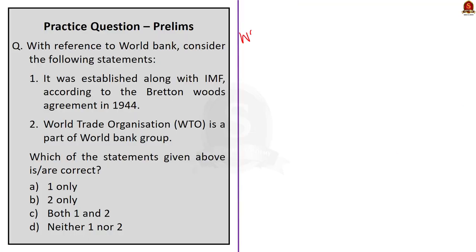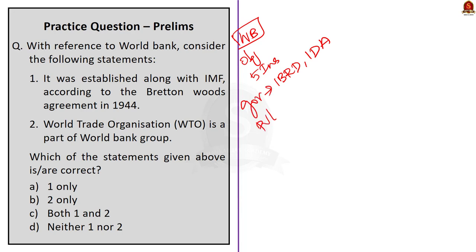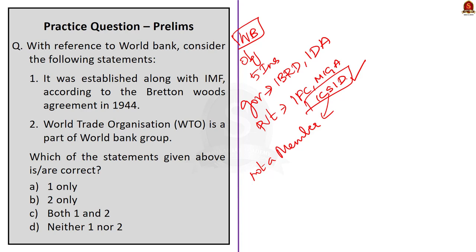In this discussion we saw about the World Bank, its objective, and the five institutions associated with it. IBRD and IDA focus on working with developing states' governments, while IFC, MIGA, and ICSID work with a mandate of strengthening the private sector in developing countries. We also saw that India is not a member of ICSID, and we saw about some of the reports released by the World Bank.